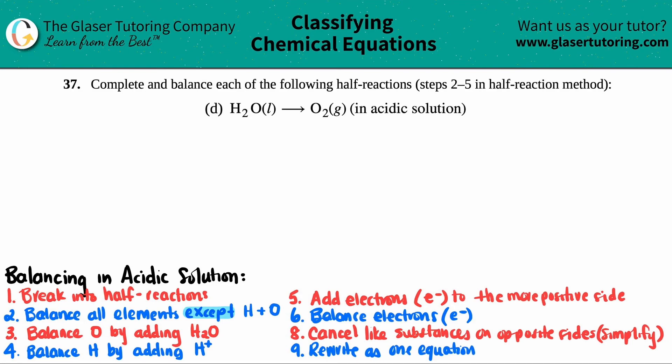Number 37, complete and balance each of the following half reactions, which is step 2 through 5 in the half reaction method. We have letter D here.